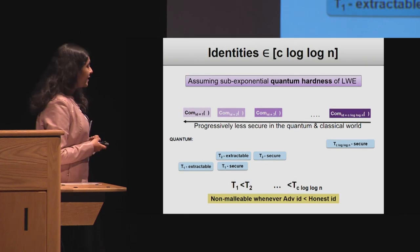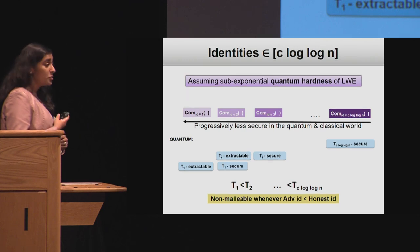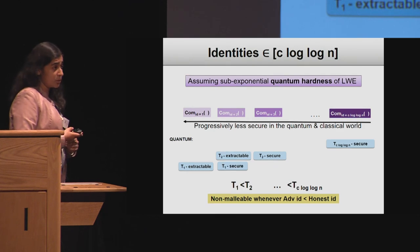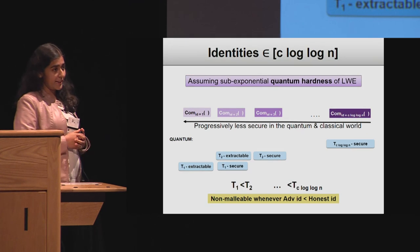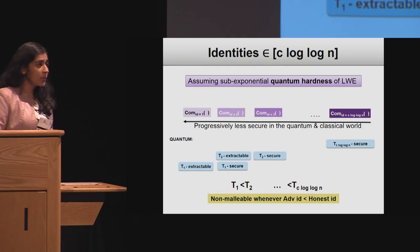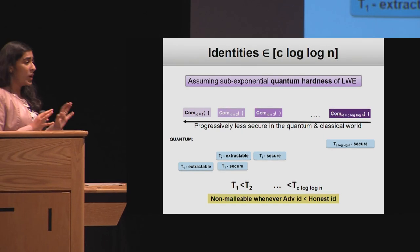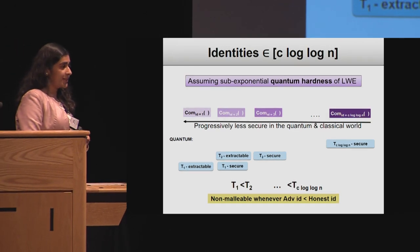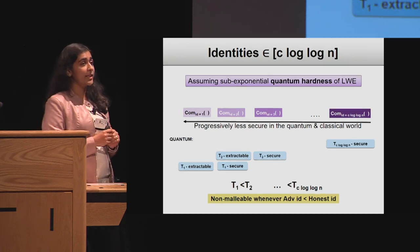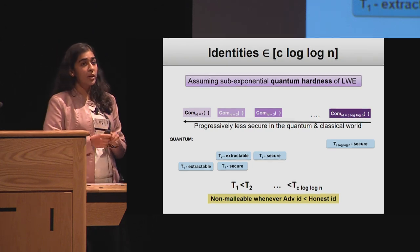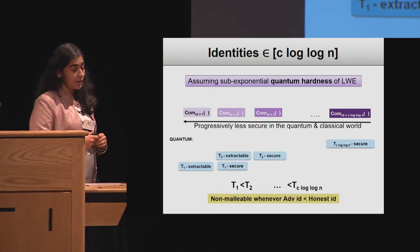So now we have two different sequences of commitments. One is secure when the adversary chooses an identity larger than the honest party's identity, and the other is secure when the adversary chooses an identity smaller than the honest party's identity. Now we need to combine these to ensure we have commitments that are secure whenever the adversary chooses any identity different from the honest party's identity.